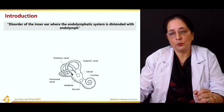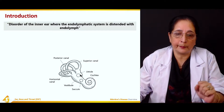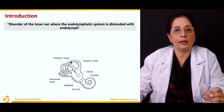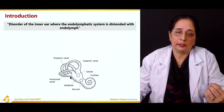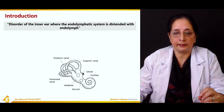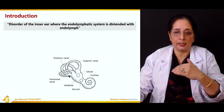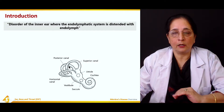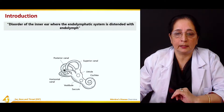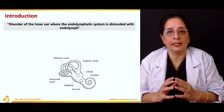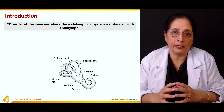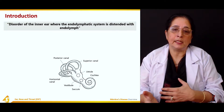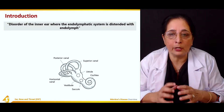The inner ear contains the cochlea. In the vestibule there are two main structures: the saccule and the utricle. Then we have three semicircular canals — the horizontal canal, the superior canal, and the posterior canal. These structures form the endolymphatic system filled with endolymph.